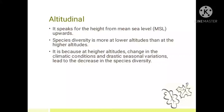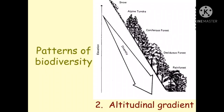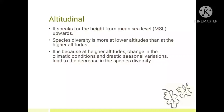Altitudinal gradient refers to height from mean sea level (MSL) upwards. Species diversity is more at lower altitudes than at higher altitudes, because at higher altitudes, changes in climatic conditions and drastic seasonal variations lead to a decrease in species diversity.